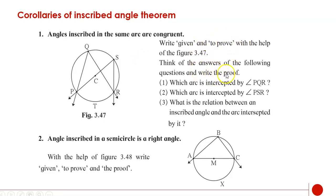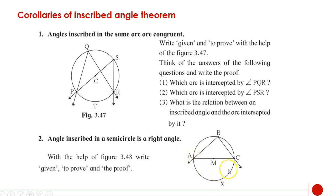You can write this theorem into your notebook on your own. Second corollary: an angle inscribed in a semicircle is a right angle. The measure of angle ABC would be half of arc AXC. Since AXC is a semicircle, its measure is 180 degrees, and half of that is 90. So the measure of angle ABC is 90 degrees. You can write a proof of this corollary also.